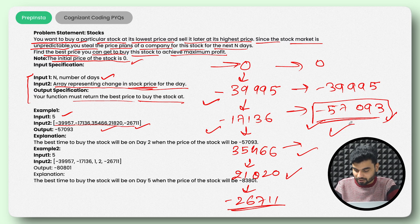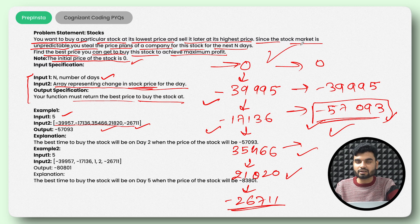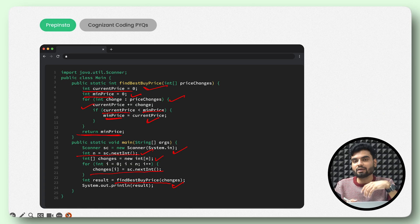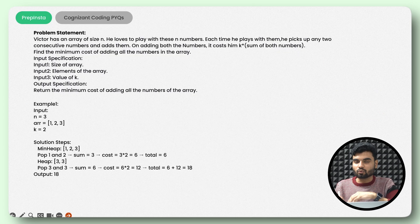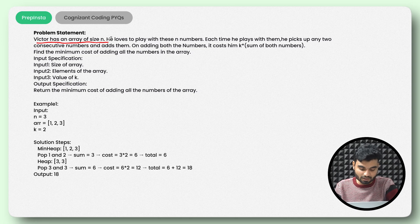The output will be minus $57,093, matching our dry run. I hope that is clear to everybody. What we have learned from this problem is not only the solution, but the approach: first understand the problem statement, then form an algorithm, then write the code. You need to understand what data structure and logic you want — only then can you write the code. That's what you have to figure out in the exam as well.